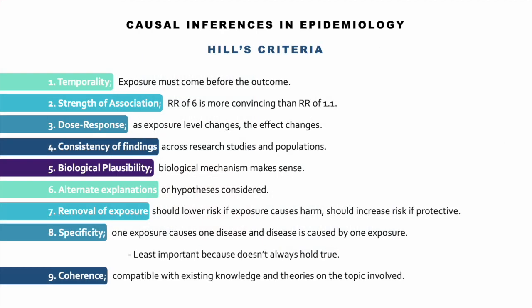Like Koch's postulates, the Bradford Hill criteria for causality should also be viewed as guidelines and not a checklist. Causality is not determined by any one factor — rather, it's a conclusion built on the preponderance of the evidence. Temporality is the most important criterion: the exposure must come before the outcome. You should also consider the strength of the association — for example, a relative risk of 6 is much more convincing than a relative risk of 1.1.